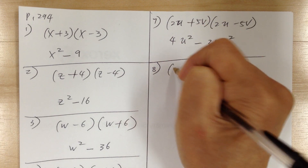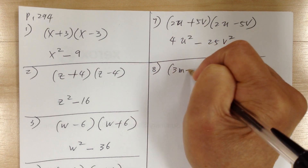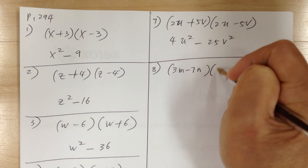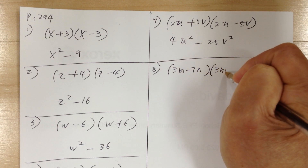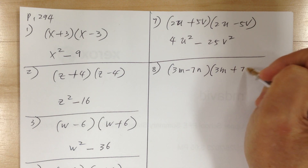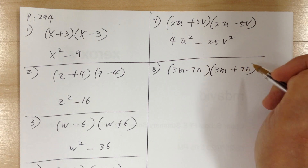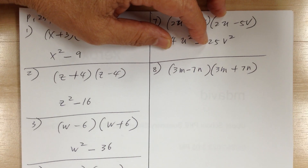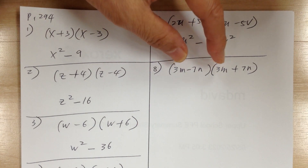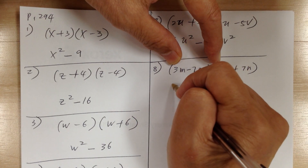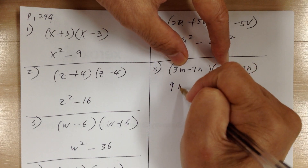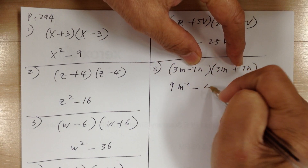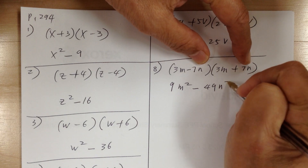Number 8: you have 3n minus 7n times 3n plus 7n. Check for conjugates — yes, they are conjugates — so you can just do the F and L. Multiply, and this will give you 9n squared minus 49n squared.